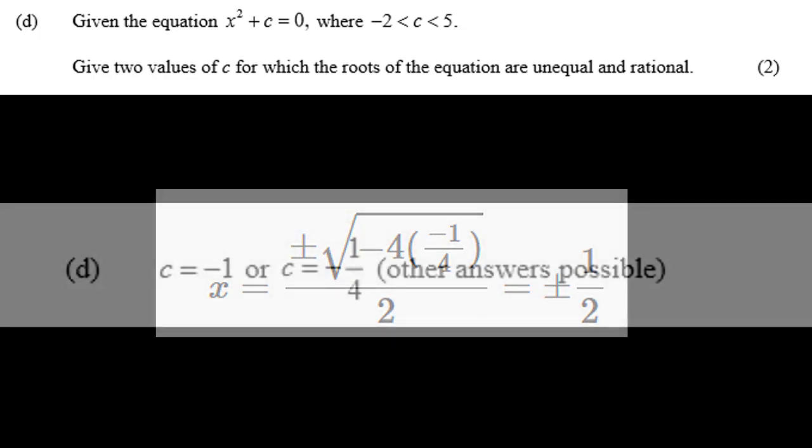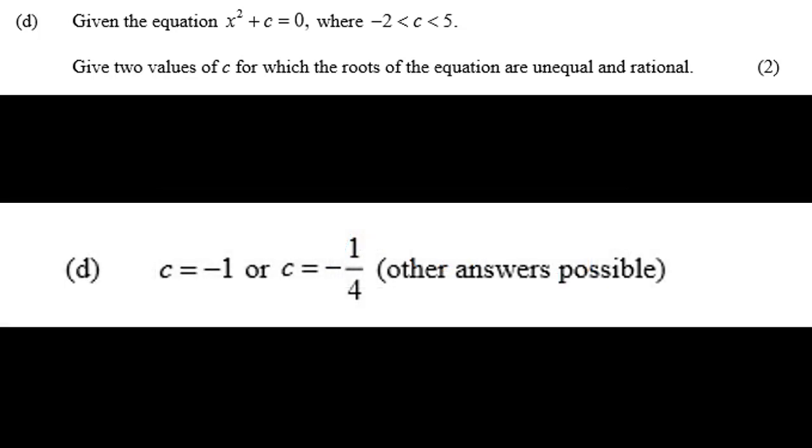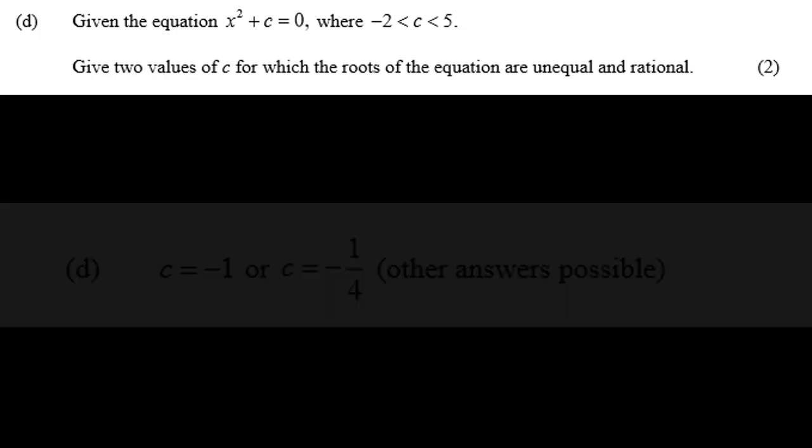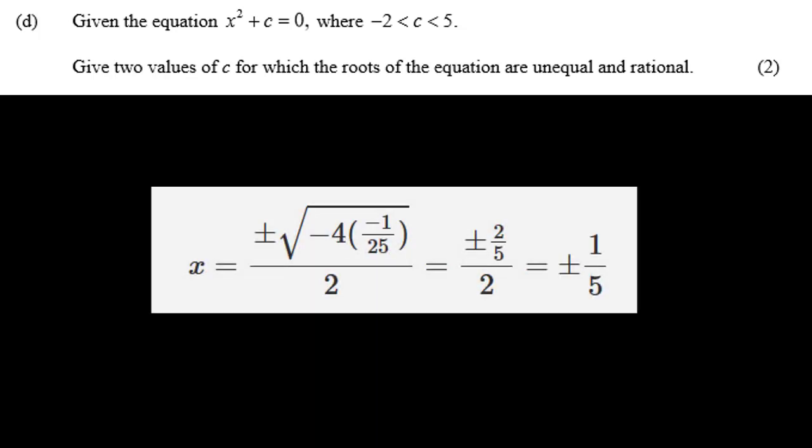So the correct answer for two cases of c where the roots are not equal and rational is c equals minus 1 and c equals minus 1 quarter. But there are more. For example, take c equals minus 1 over 25, then the square root of minus 4c is the square root of 4 over 25, which is 2 over 5, which is rational.